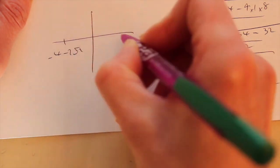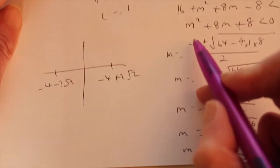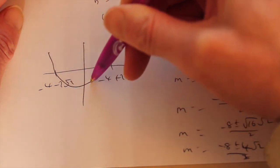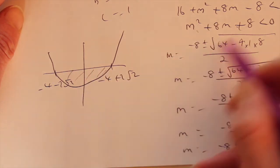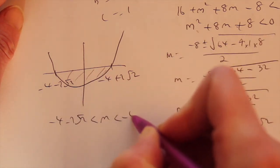That tells you the critical values as in where it would cross the x-axis. So minus 4 minus 2 root 2, minus 4 plus 2 root 2. If you look up here, you've got a positive M squared. So it's U shape. You want roots under the axes. So this is where M is. So M is between these two values. And that is your answer.